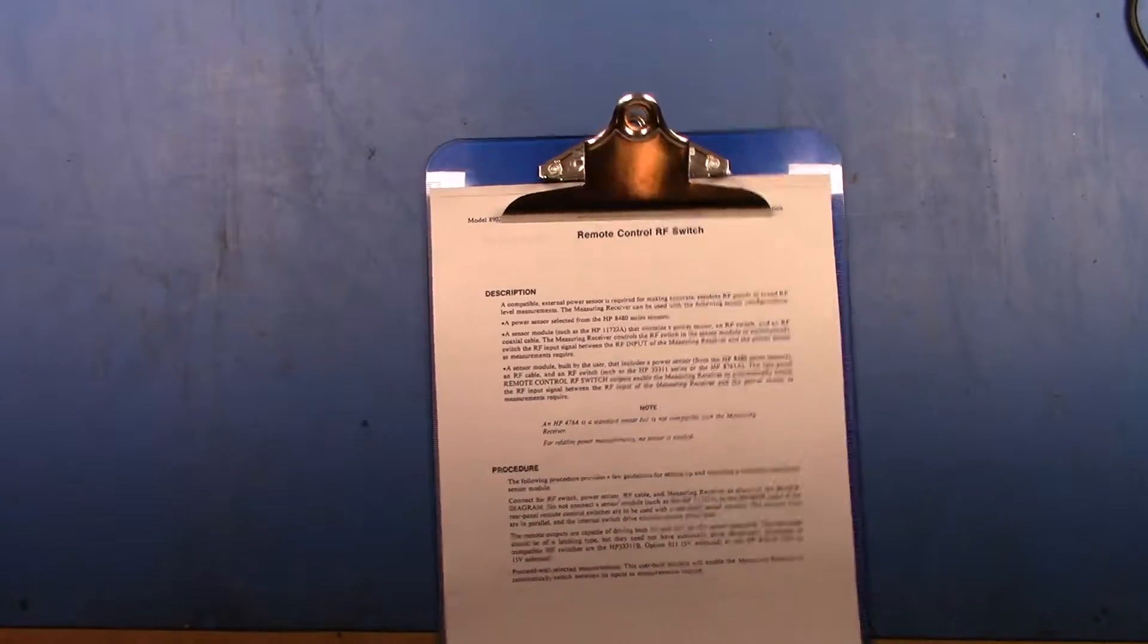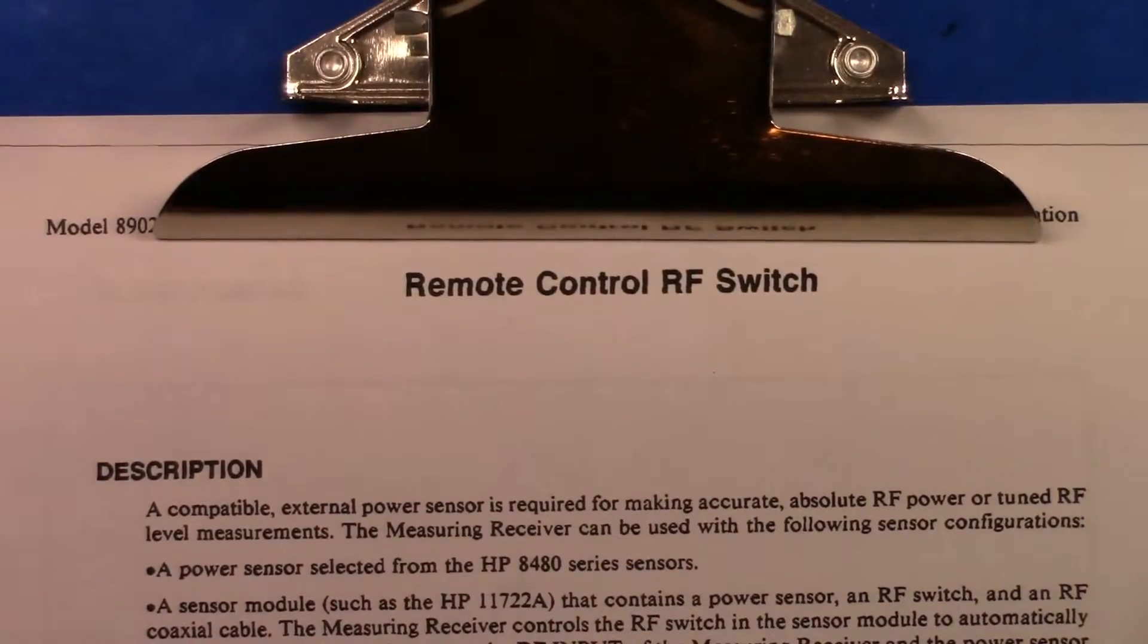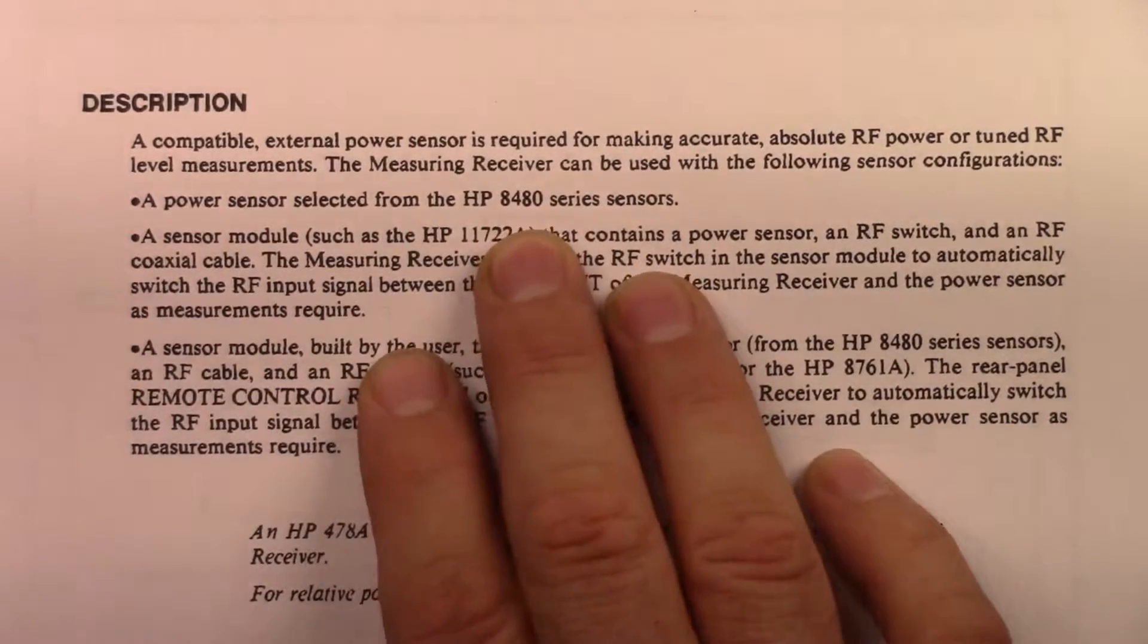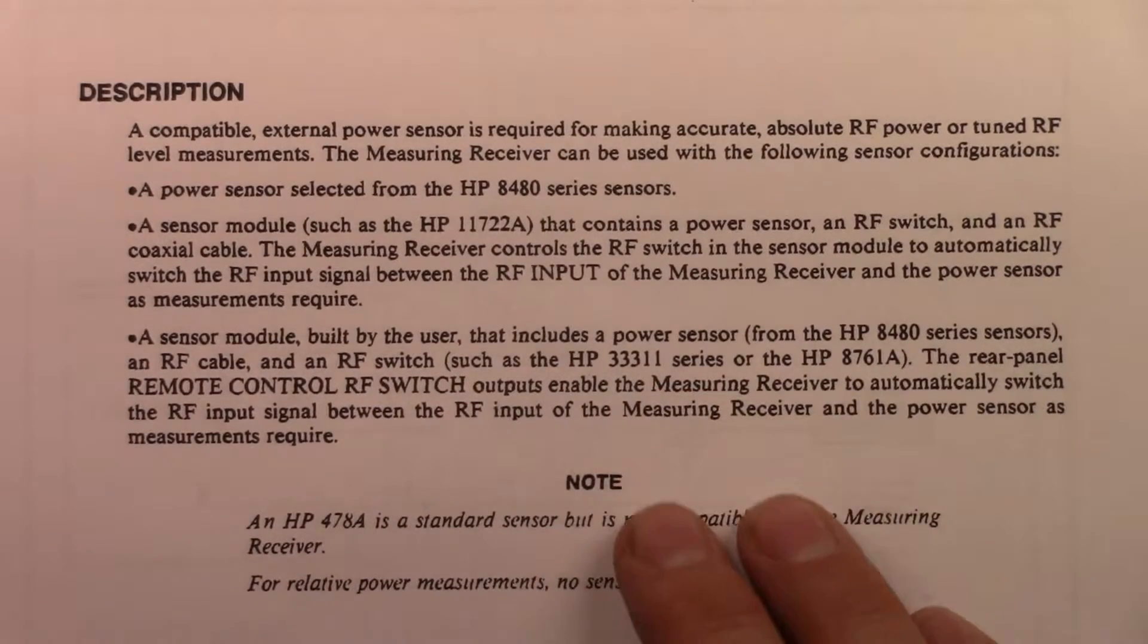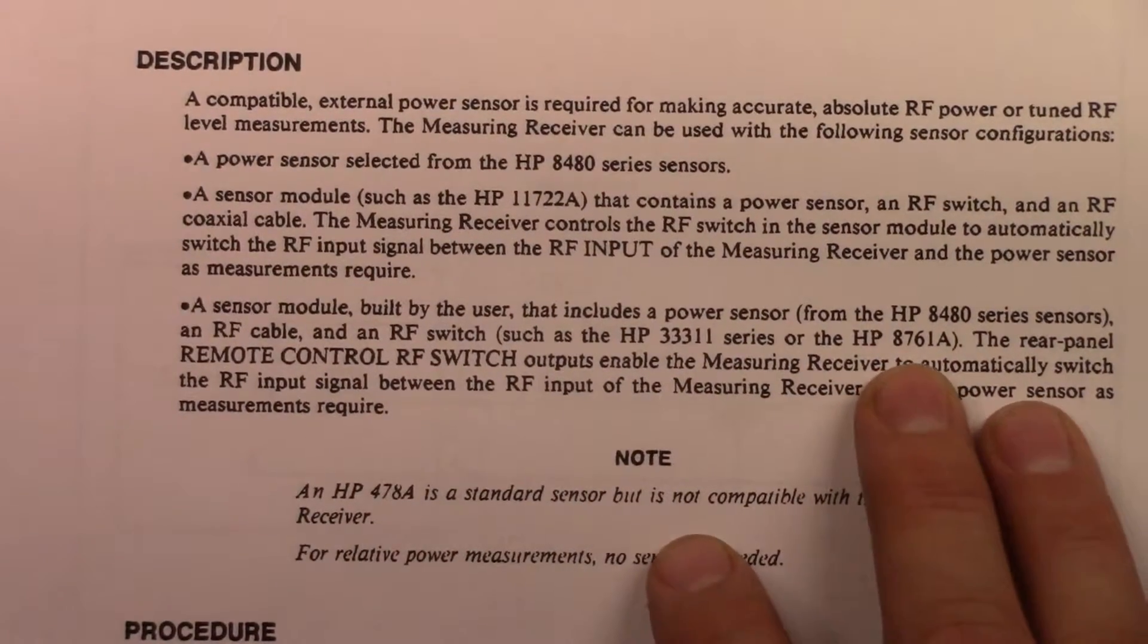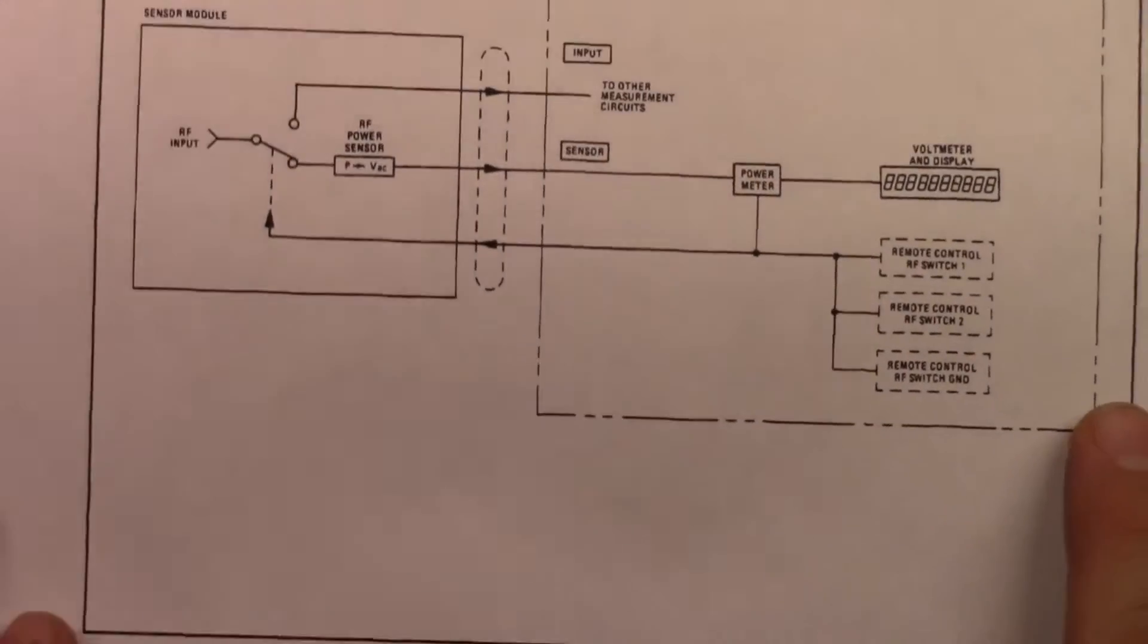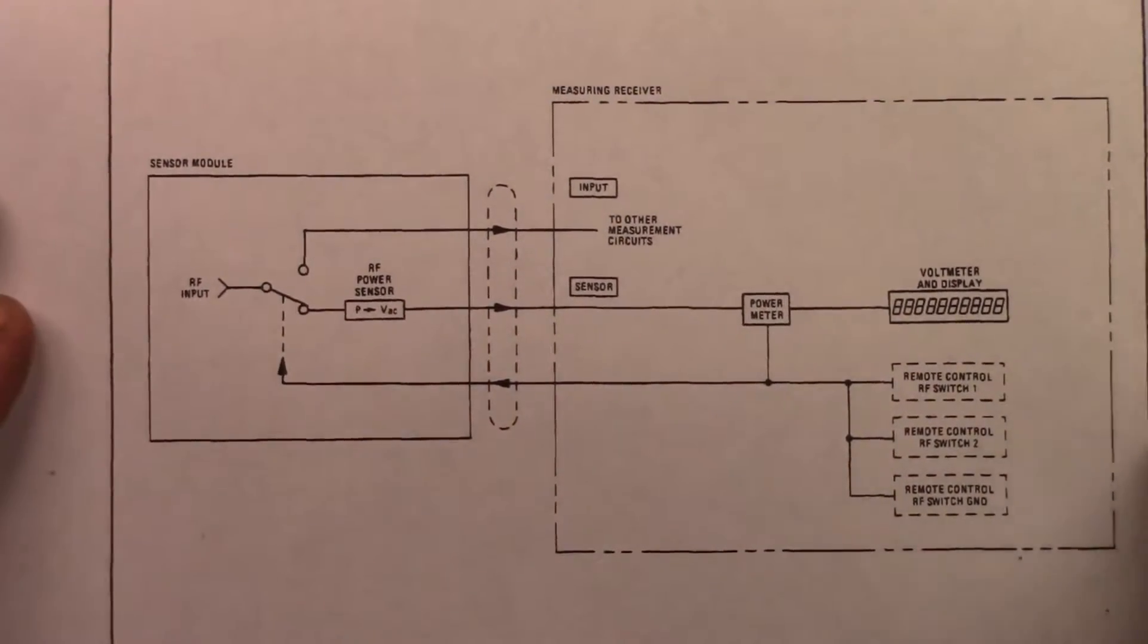Here is the relevant section out of the manual. Let me zoom in a bit so that we can see this. It's about building a remote control RF switch and it goes through to describe what it is and the type of power sensors that you need. So you need something from the 8480 series of sensors. You need a switch and the switch needs to be capable of dealing with the power that comes out of the back, so either a 3311 or an 8761A. And then there is a procedure that you can follow and effectively a little diagram that shows you how the sensor works. And this is effectively exactly how the 11722A sensor works.